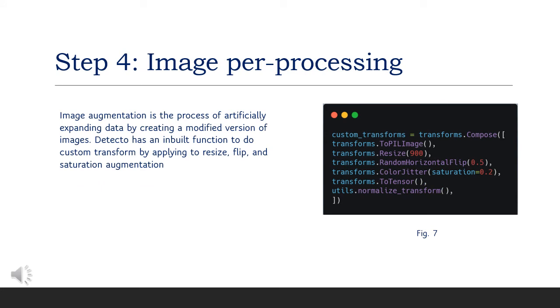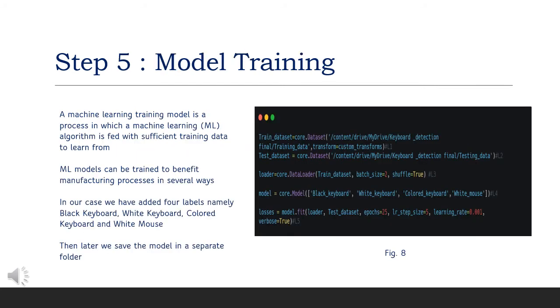Image augmentation is the process of artificially expanding by creating a modified version of images. Model training part. Here we have trained the data in train_data variable. Then we have loaded the data and we have also captured all the losses and fit the data model according to it.